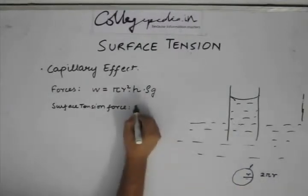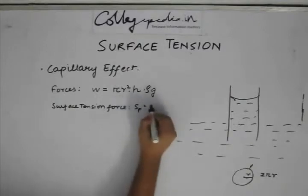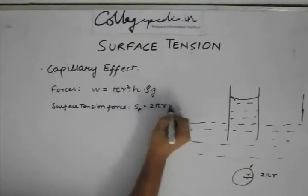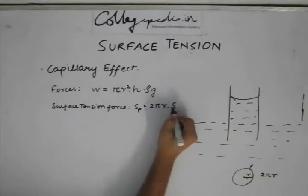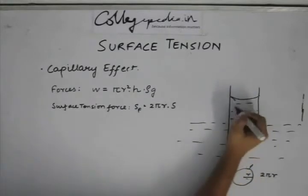We will have Sf is equal to 2π r times s. This is the net surface tension force, we only need to consider the vertical component of it.